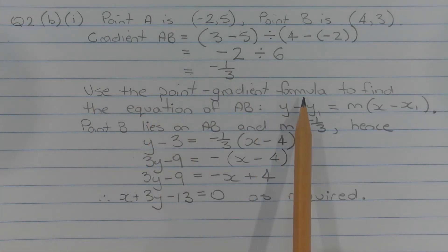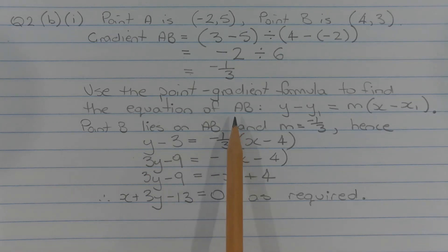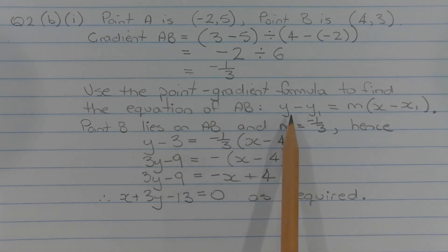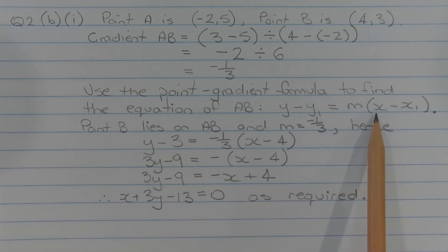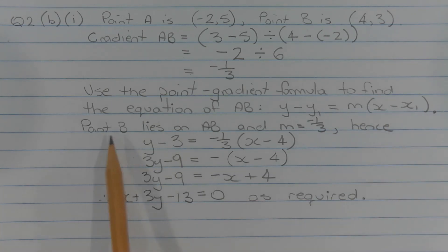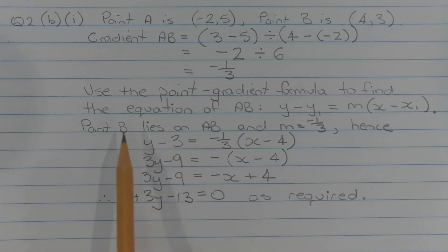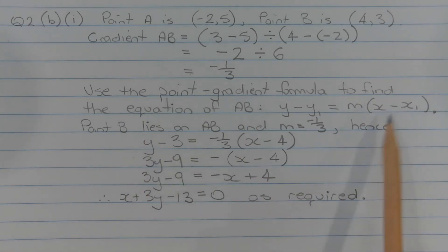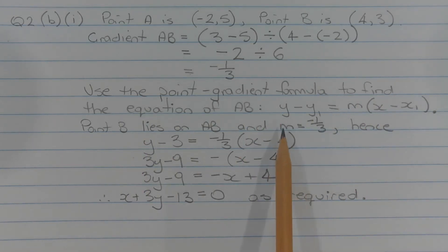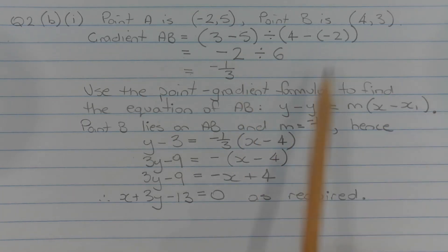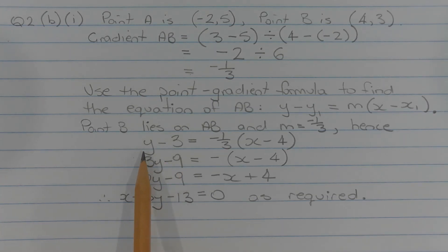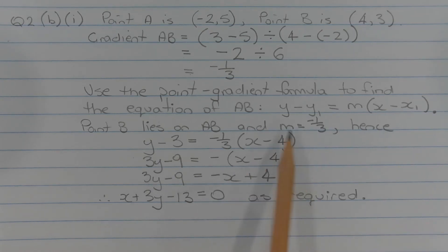Next, use the point-gradient formula to find the equation of interval AB. We have y minus y1 equals m times x minus x1. Point B lies on interval AB, so I am going to use the coordinates of point B and the gradient of negative 1 over 3, which we just found. Substituting those values in, we get y minus 3 equals negative 1 over 3 times (x minus 4).